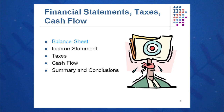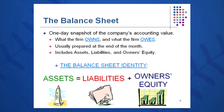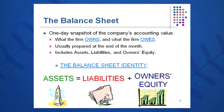Let's move into the balance sheet. The balance sheet is a one-day snapshot of the company's accounting value — its economic health. On the left side is what the company owns, and on the right side is what the company owes. It's usually prepared on the last day of the month, and it's a one-day snapshot.